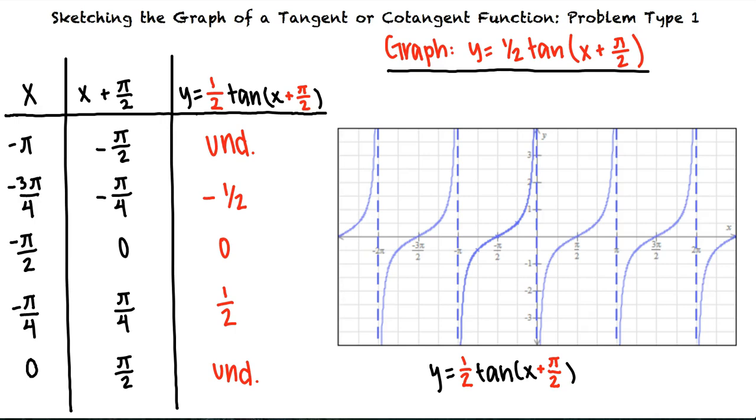Okay, so when sketching the graph of a tangent or cotangent function we can begin by plotting a few key points of the original function. We can then account for shrinking and stretching as well as horizontal or vertical translations by making the appropriate changes to the key points, which will result in our new graph.